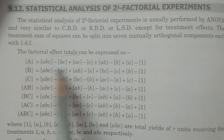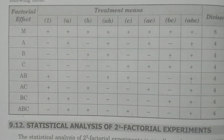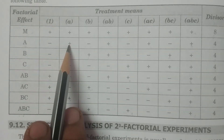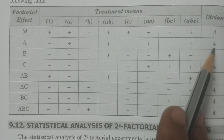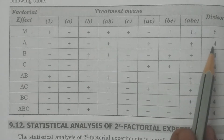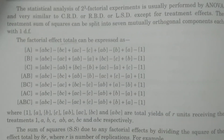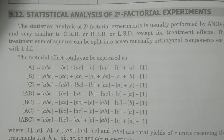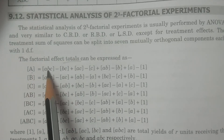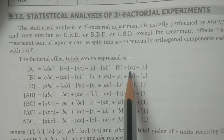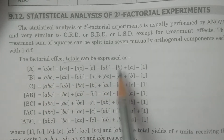For the factorial effect total A, the sign of A is positive in combinations containing A — that is, A, AB, AC, and ABC — all have positive signs. So the total [A] = [ABC] − [BC] + [AC] − [C] + [AB] − [B] + [A] − [1]. A divisor is not required here because these are totals.